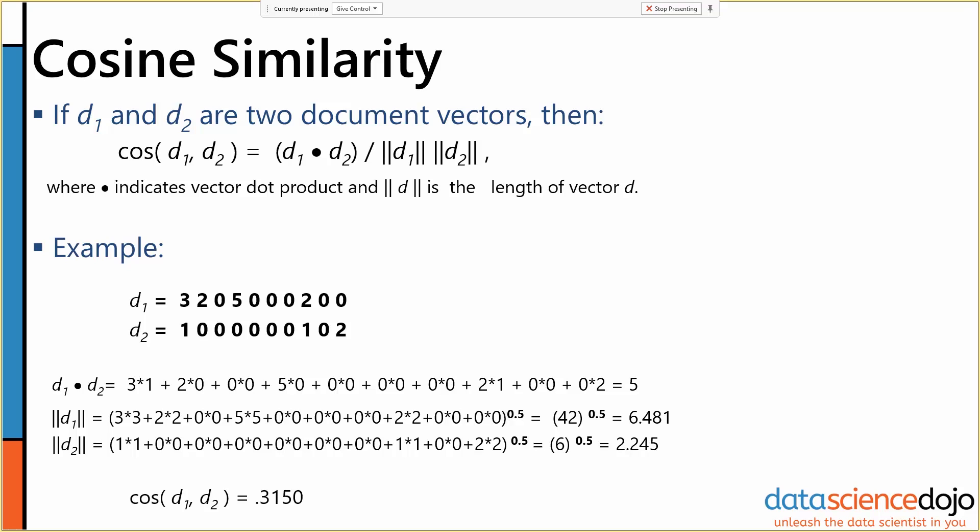We can find how similar the two documents are by thinking of each of them as vectors, taking their dot product, which for those of you who never had it or don't remember your college vector calculus classes, you take each attribute, attribute by attribute, and you multiply them together across your two different objects.